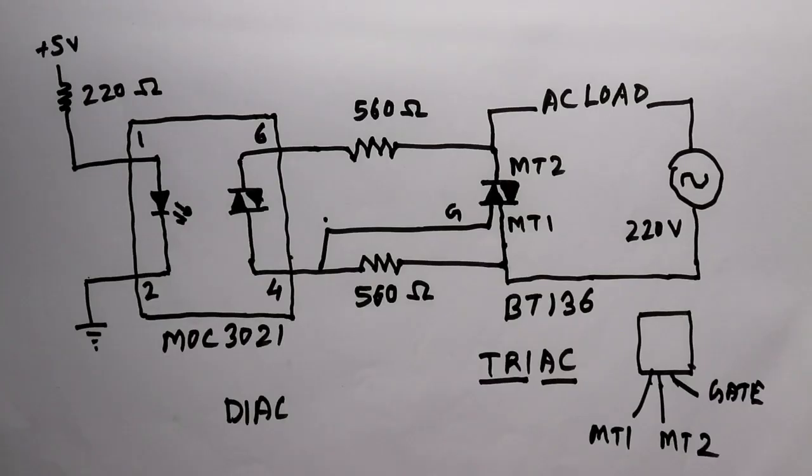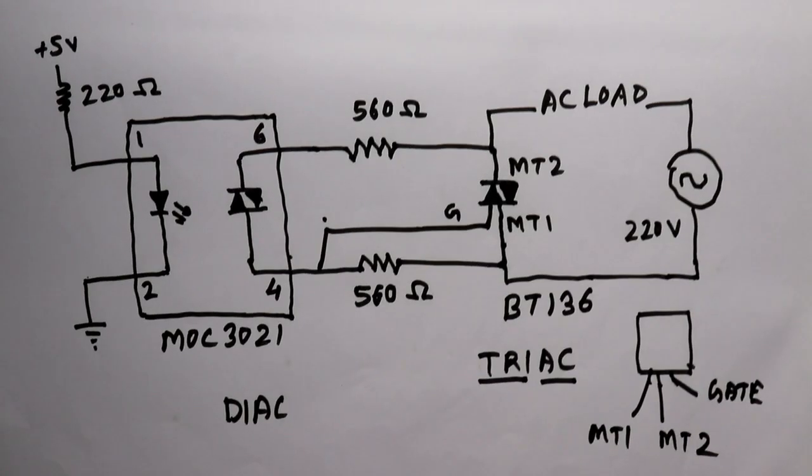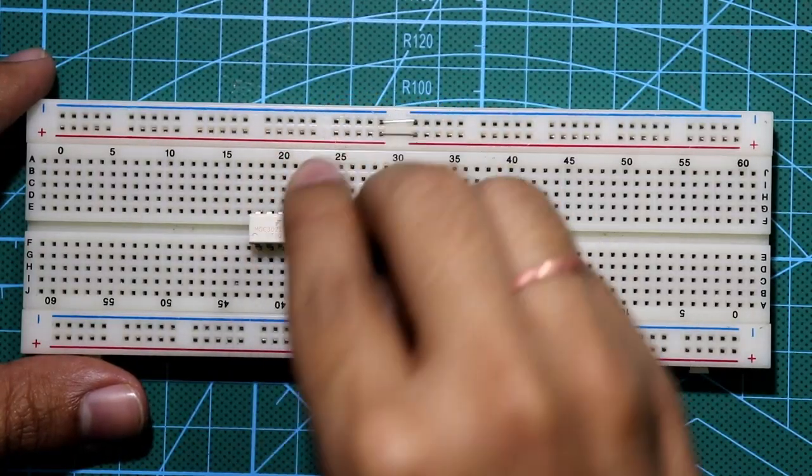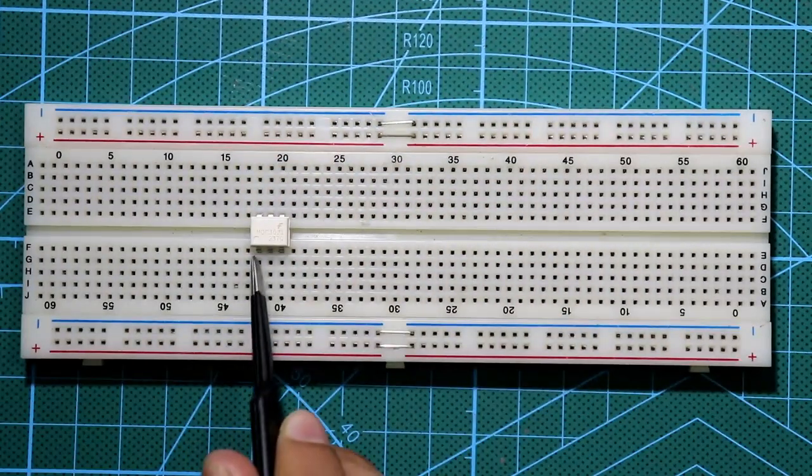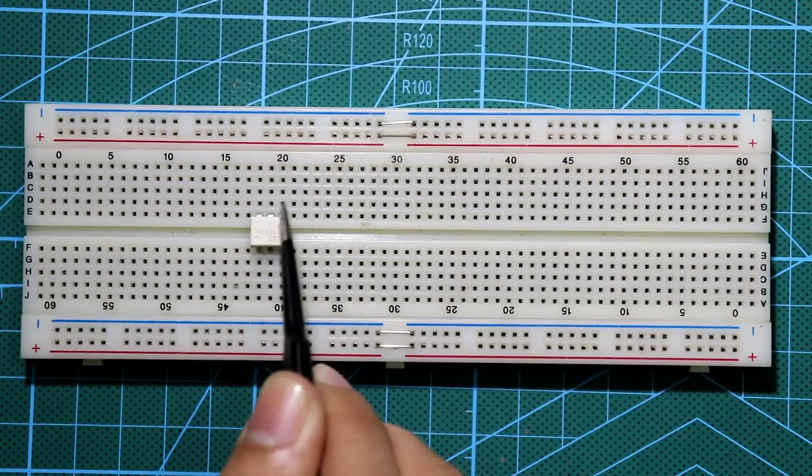Now let's see the breadboard connection. Put the optocoupler here. It is pin number one, two, three and four, five, six.